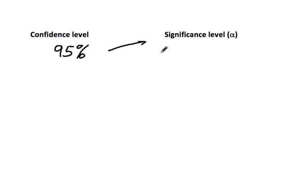They are both related to each other by the equation of significance level, which is usually abbreviated with alpha. So significance level alpha equals 1 minus the confidence level.